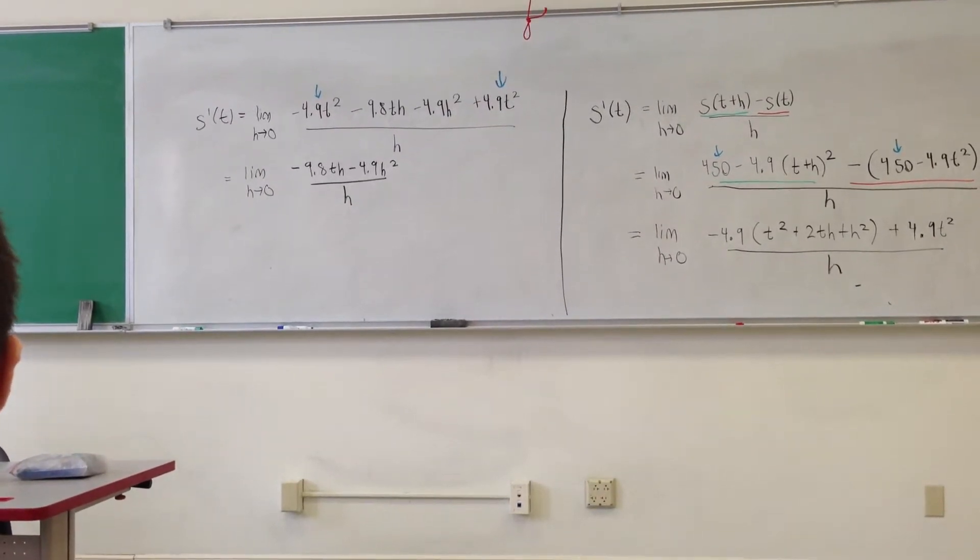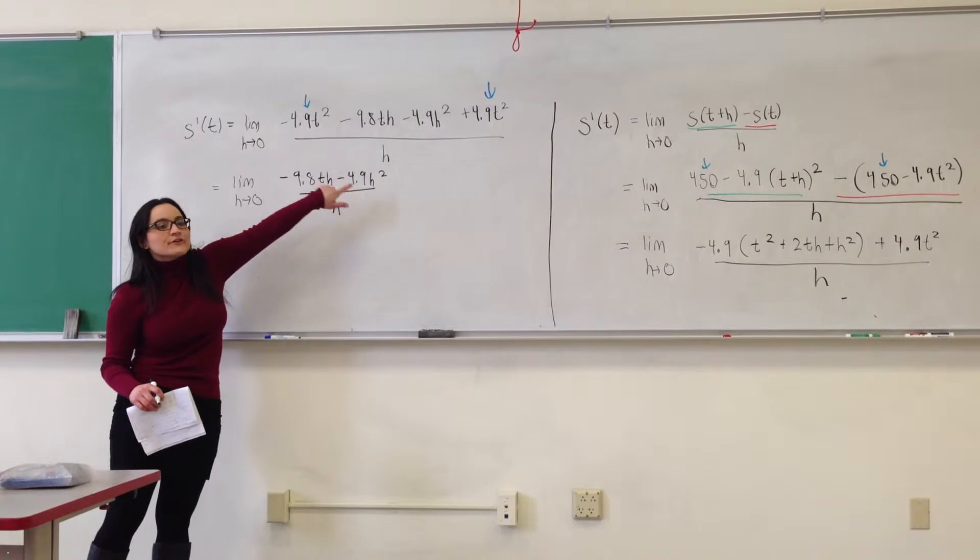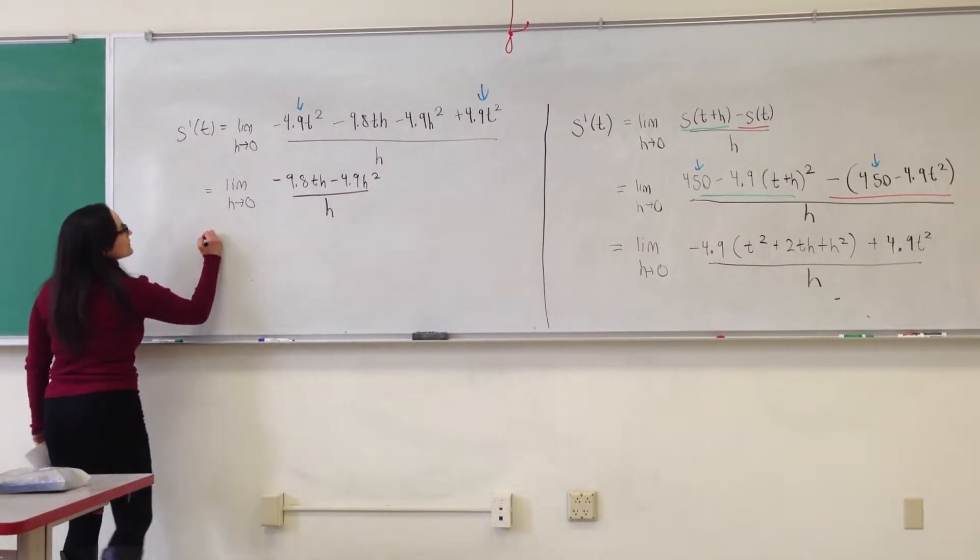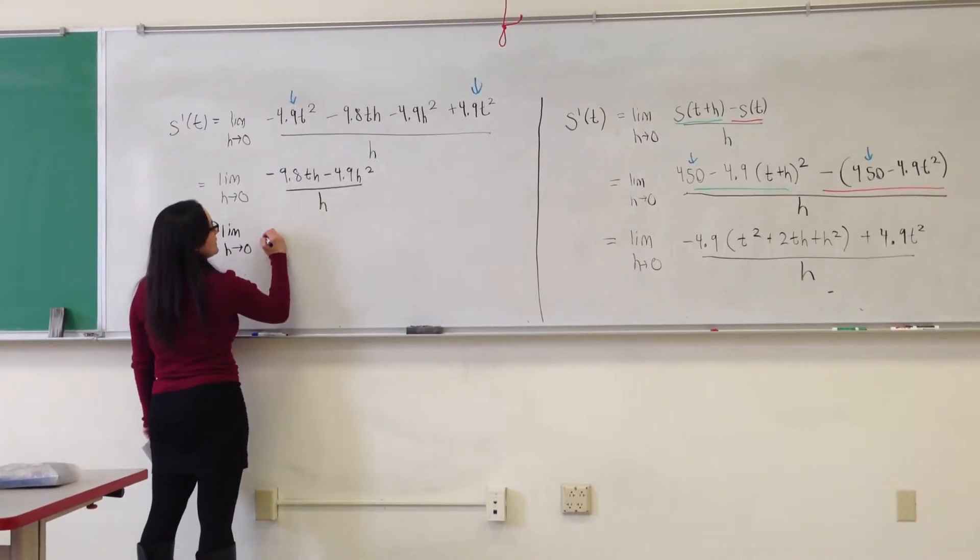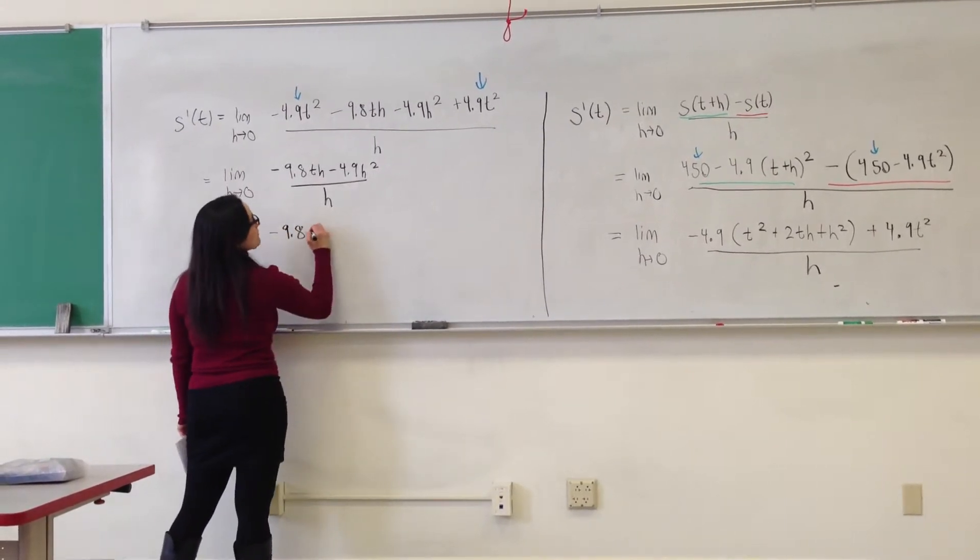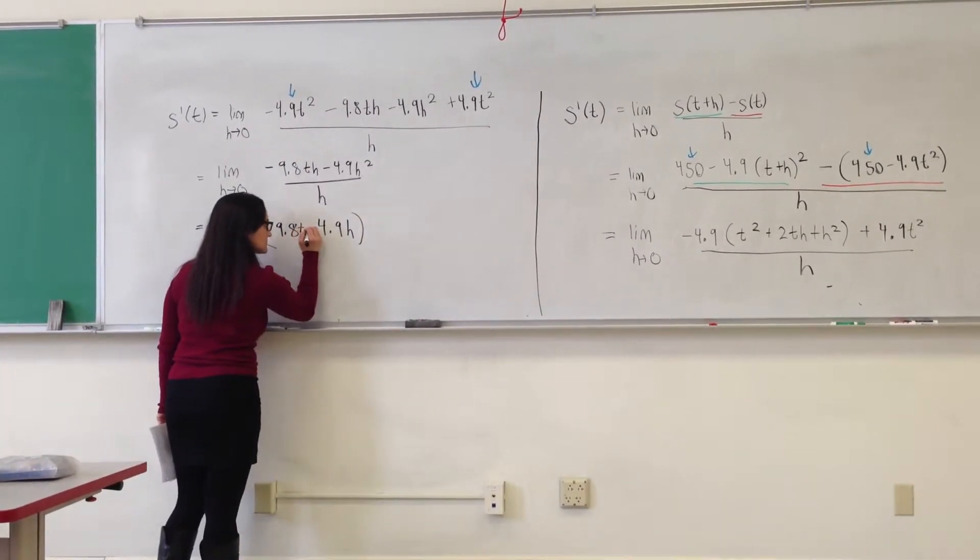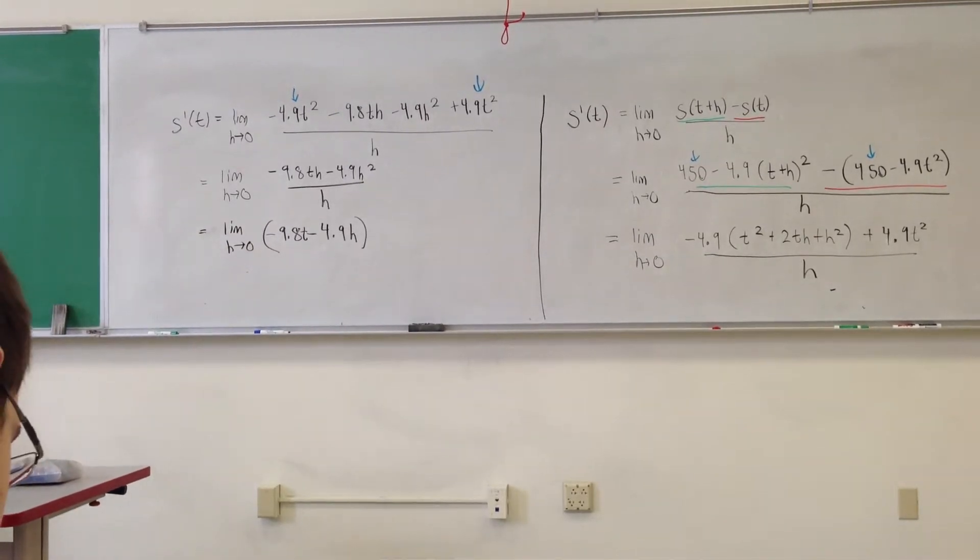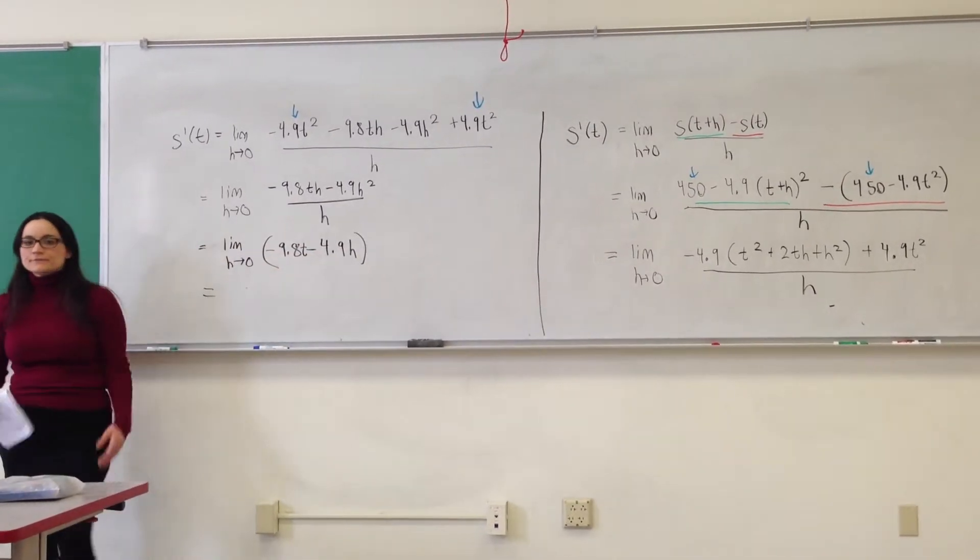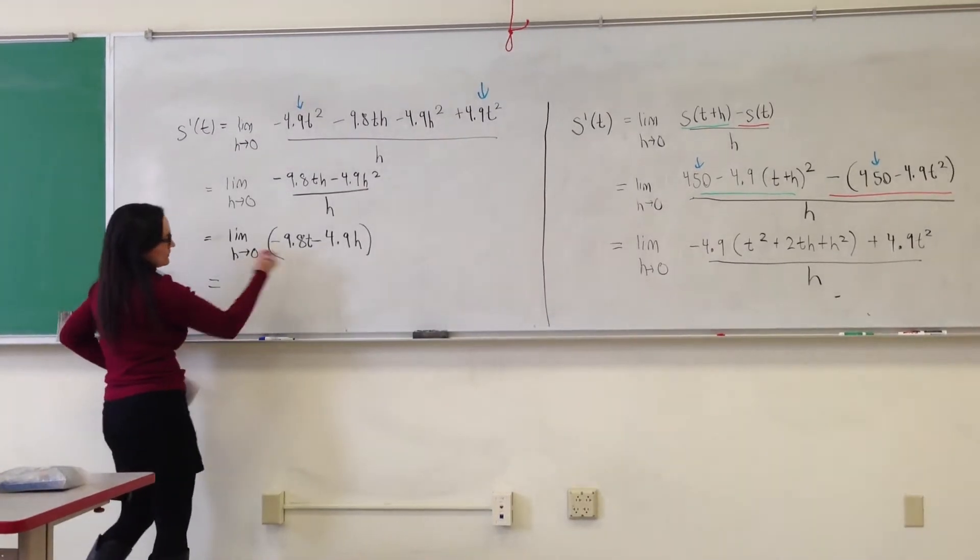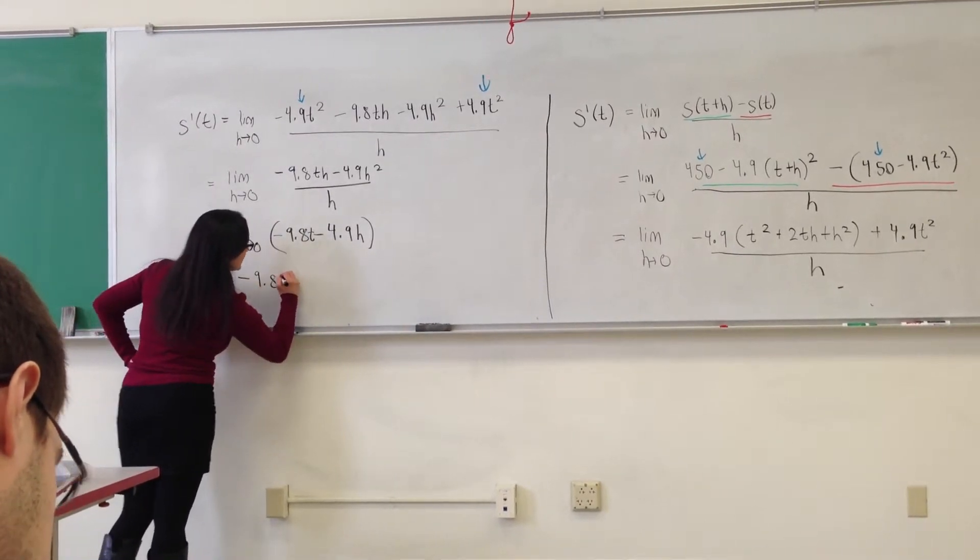This is good? This is good now, right? What do I do next? Now every term in the numerator has an h. So I can cancel out an h in the numerator in each term. So this is the limit as h approaches zero, negative 9.8 t minus 4.9 h. And now I can send h to zero. This is a linear expression. So using my direct substitution property, plug in h to zero. And I get negative 9.8 t.